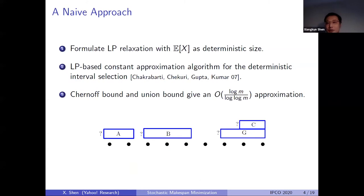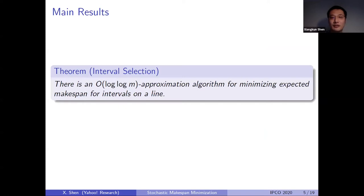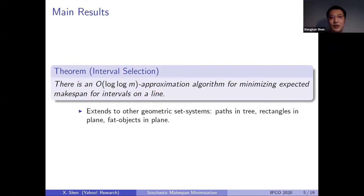Let me first describe a naive approach to solve this problem. Since we are solving a stochastic problem, one simple idea is to use the expected size as a deterministic value and solve the deterministic version. We can perform an LP relaxation with the expectation of x as the deterministic size and then solve the LP using the deterministic algorithm. With Chernoff bound and union bound, this gives a log over log log M approximation. Our main result achieves a log log M approximation for this problem, and it is a general framework that extends to other set systems, for example, paths in trees, rectangles in the plane, and fat objects in the plane.